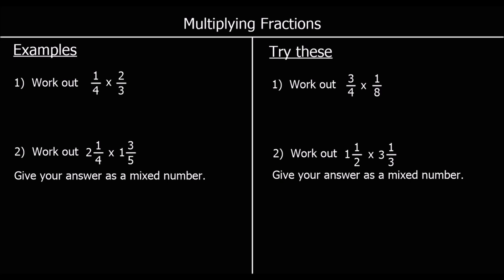Multiplying fractions. To multiply fractions, we multiply the top and we multiply the bottom — times the two numbers on top and times the two numbers on the bottom. So a quarter times two-thirds is one times two, which is two, over four times three, which is twelve. That gives two-twelfths, and we can simplify this: halving the top and bottom gives one-sixth.